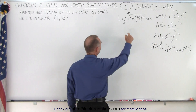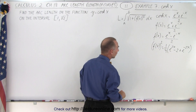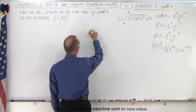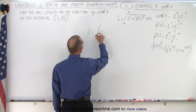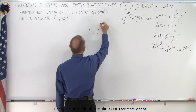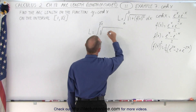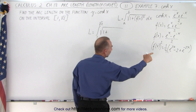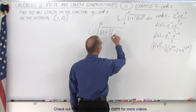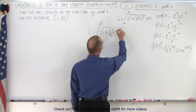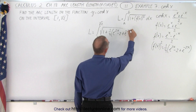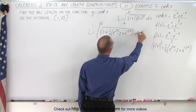Now we can plug that into the general form of the integral to find arc length. So arc length is equal to the integral from 1 to the square root of 2 of the square root of 1 plus 1 quarter times e to the 2x minus 2 plus e to the minus 2x, times dx.